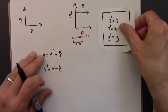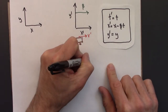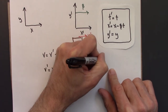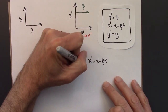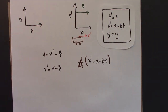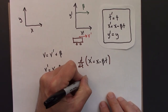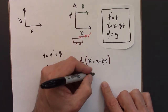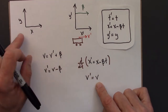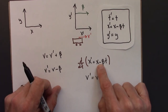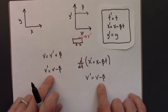For those who know calculus, we can also get this same result using calculus. If we take this position equation and take the time derivative of both sides, the derivative of position is velocity — that's the velocity in the prime (moving) frame on one side, and the velocity in the unprimed (stationary) frame on the other. The derivative of beta*t gives beta, since beta is a constant and the derivative of t is 1. This gives the same result as before.